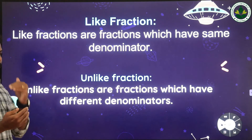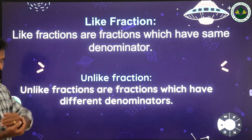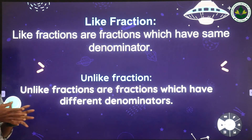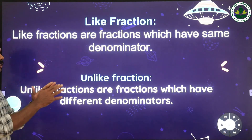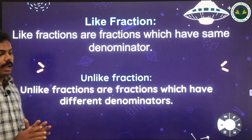Like fractions are fractions which have the same denominator. If the denominators are different, then they are called unlike fractions — unlike fractions are fractions which have different denominators.